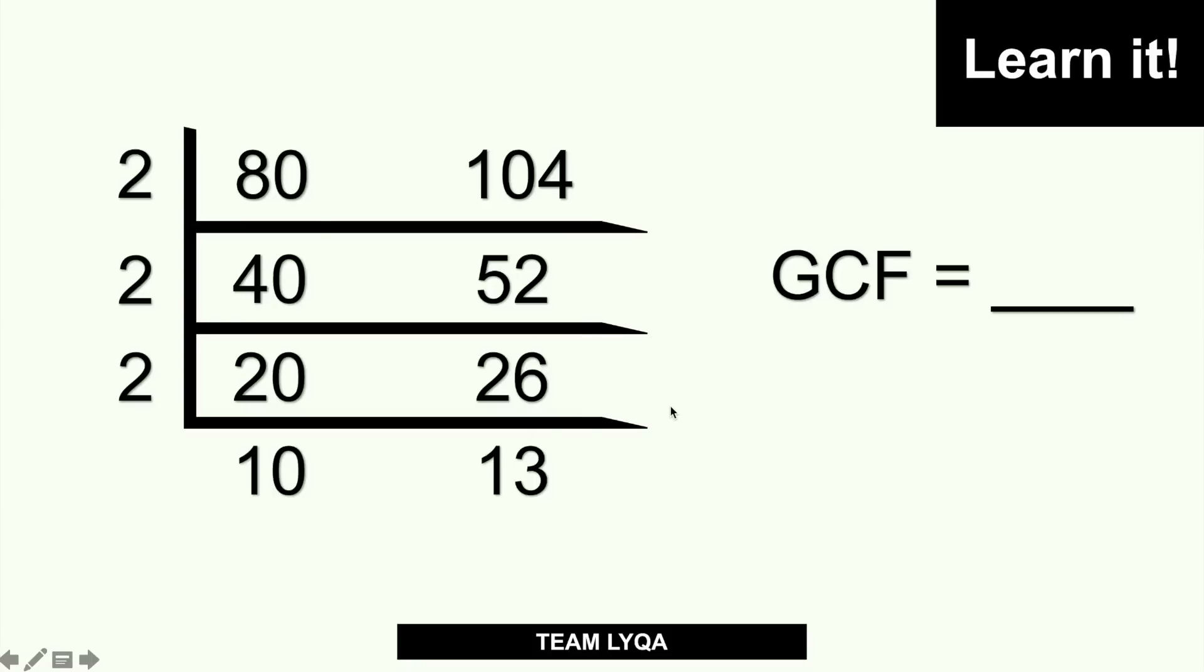Now, if you're looking for the GCF, what you're going to do actually is just deal with everything on the left side. The 2, 2, and 2. 2 times 2 times 2, I'll just multiply what's on the left side. Okay? So, 2 times 2 is 4 times 2. That would give you 8. The greatest common factor would be 8.